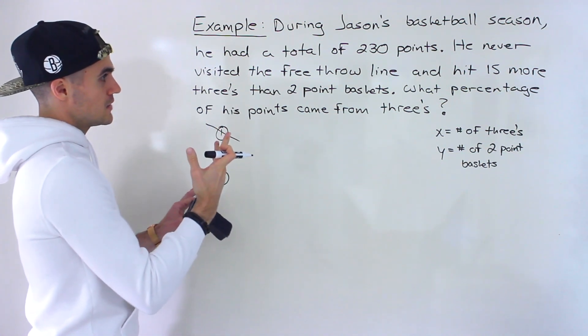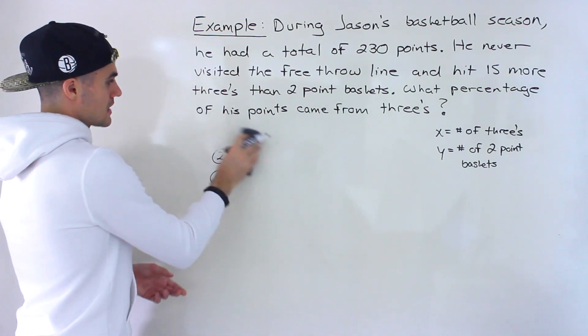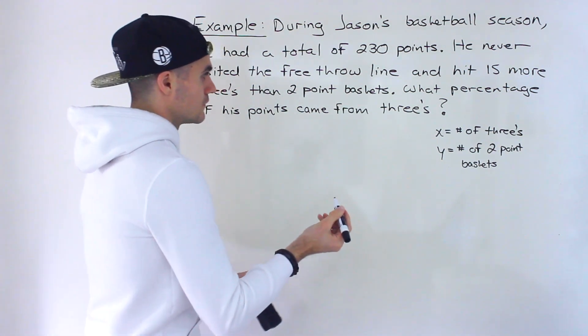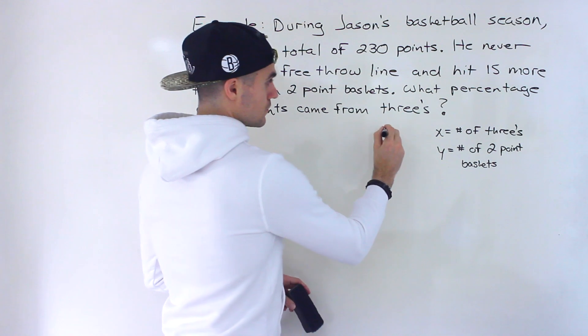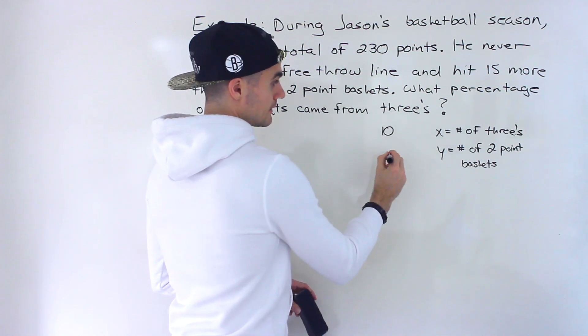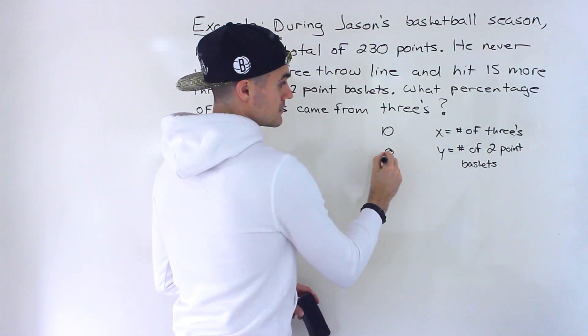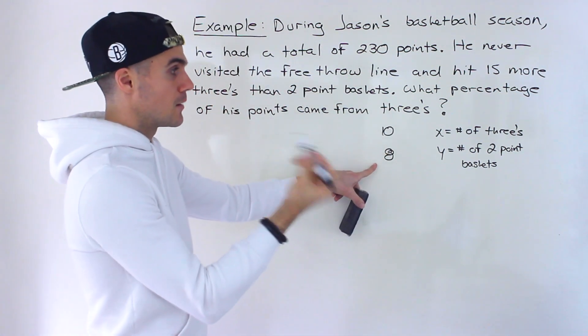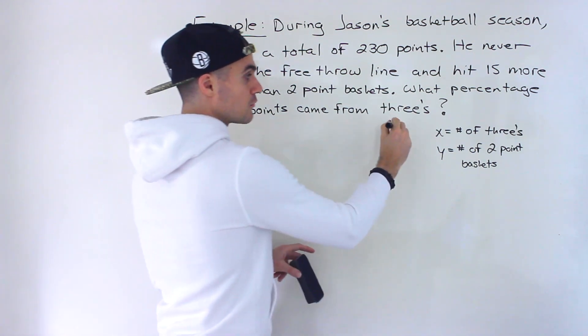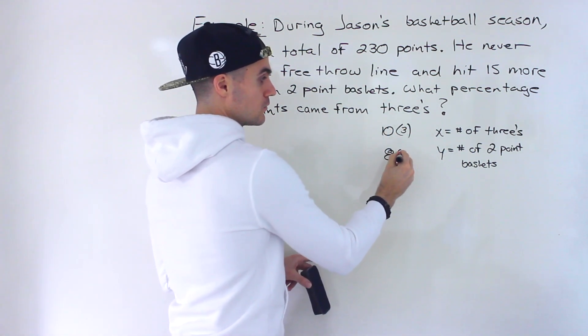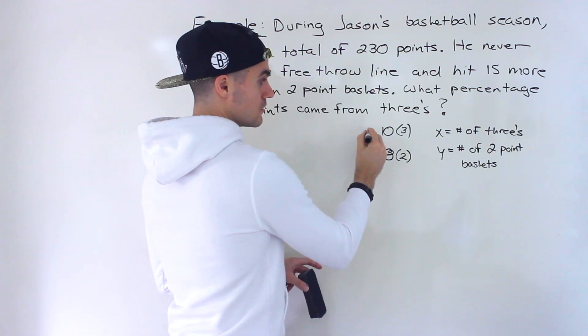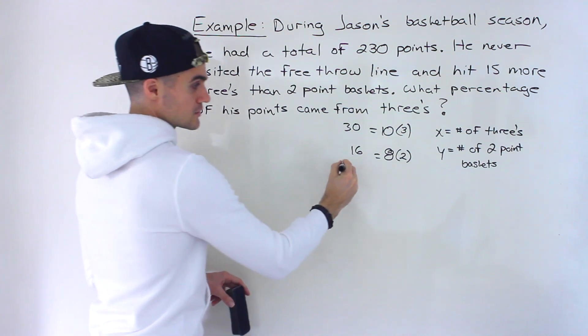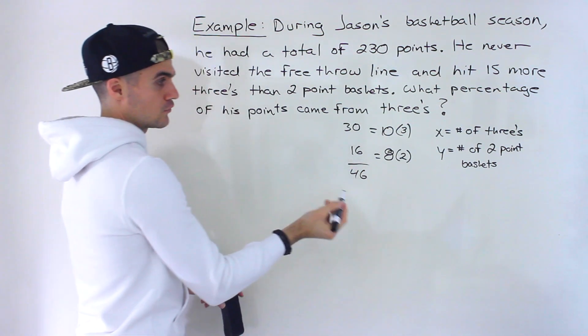And now with this information, we've got to create some equations. So let's say that he hit, for example, just to show you where we're going, let's say that he hit 10 threes and then let's say he hit 8 two-point baskets. Well, this is not the total number of points. This is the number of threes, the number of two-point baskets. To get the total number of points, we'd multiply this by three, we would multiply this by two. So it would be 30 points and then 16 points. So then the total here would be 46.